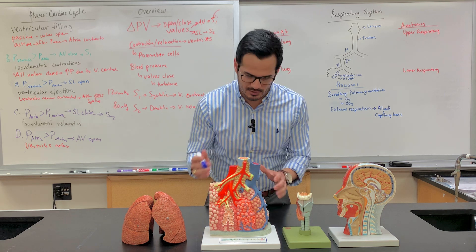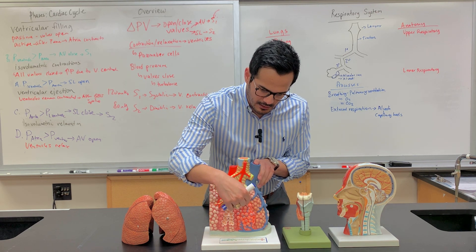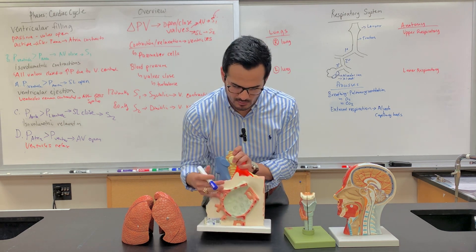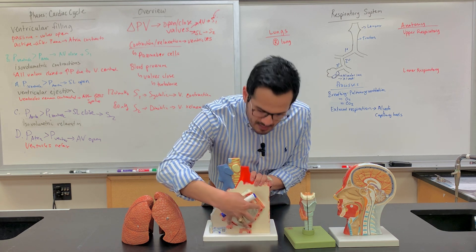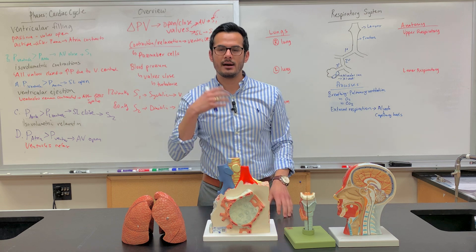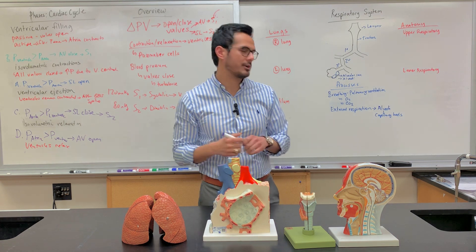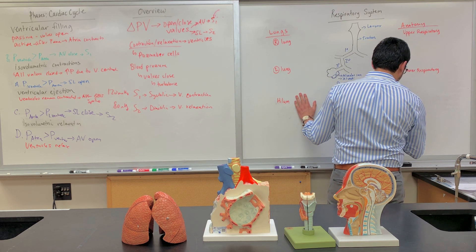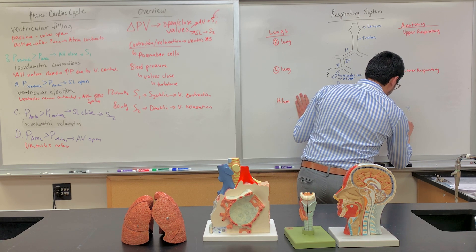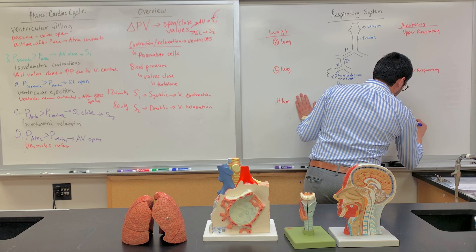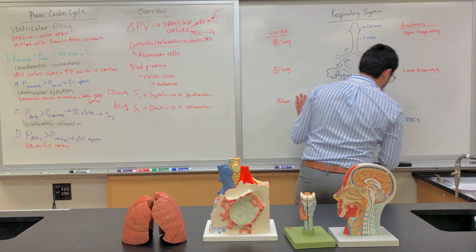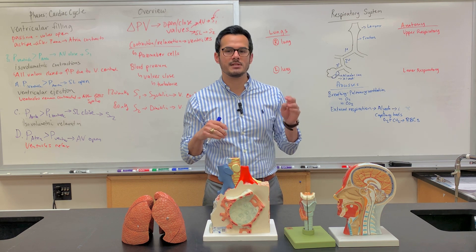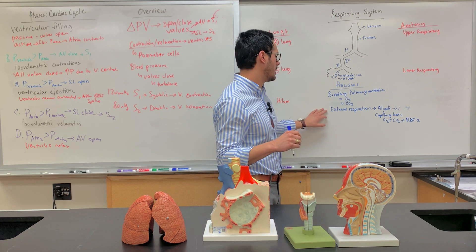That's what this model is representing — these are the individual alveoli and then this is the alveolar sac. You can see this is like the blown-up part of it, and these are all the capillaries surrounding it. The oxygen we breathe in gets transported — O2 and CO2 are transported through red blood cells. These red blood cells pick up the oxygen and dump off the CO2, which is what we exhale. This is external respiration.